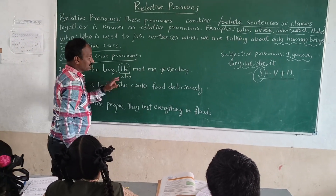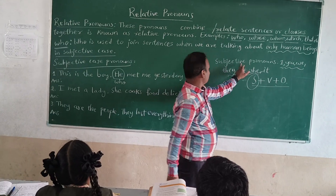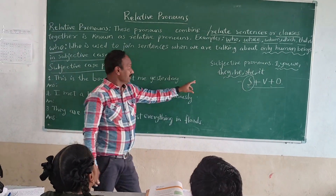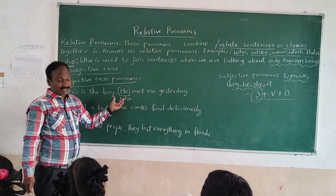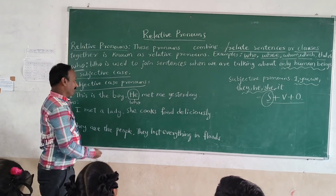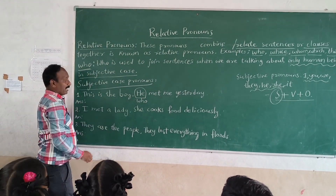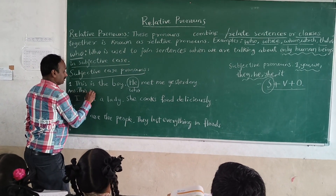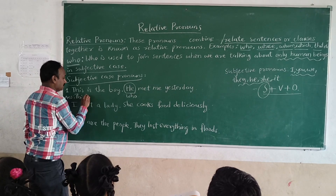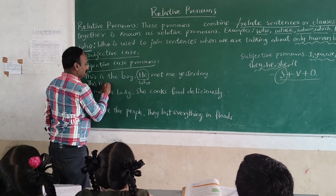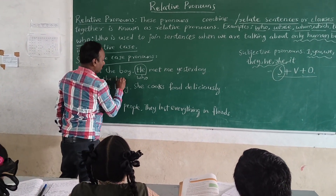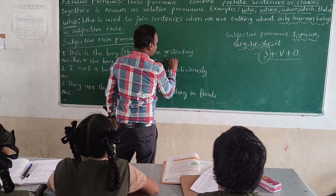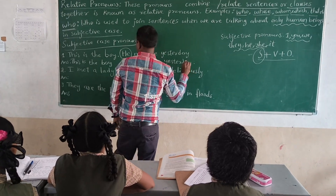If we find subjective case pronouns like I, you, we, they, in the place of these we can use 'who'. So the answer is: 'This is the boy who met me yesterday.'